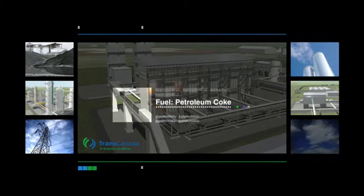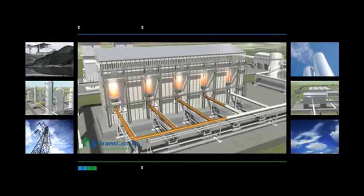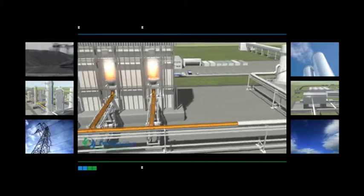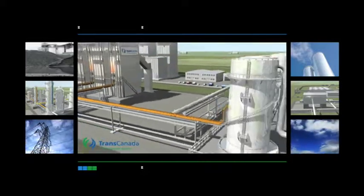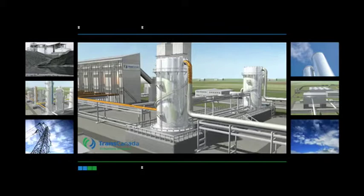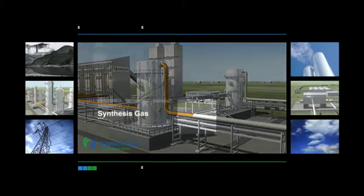The resulting gas is then combined with steam to become synthesis gas, or syngas, containing primarily carbon dioxide and hydrogen. This is the foundation for the polygeneration process.